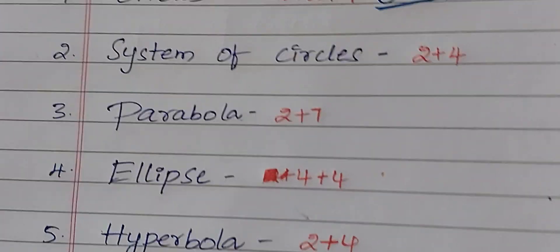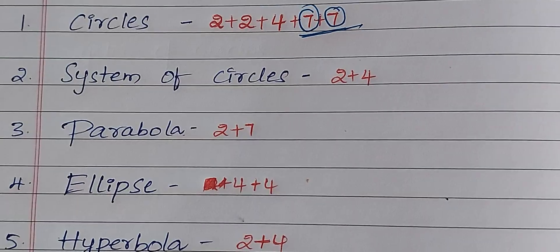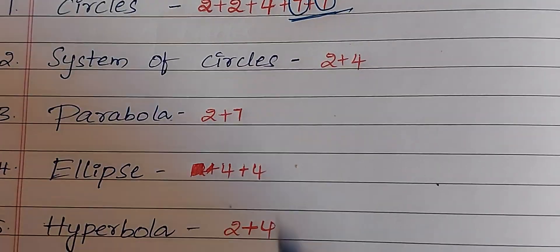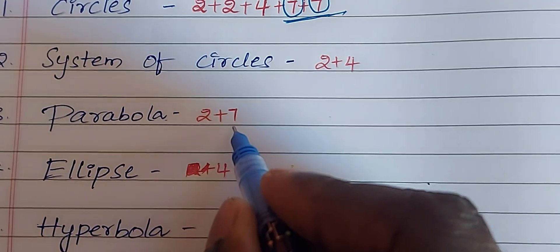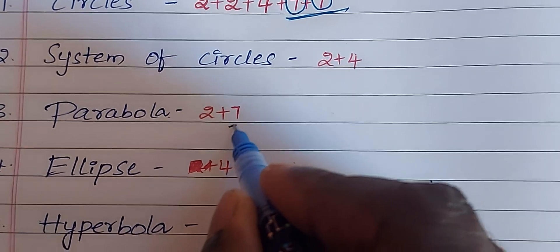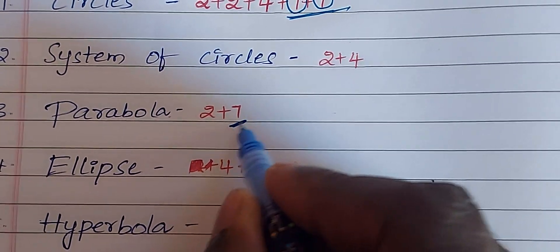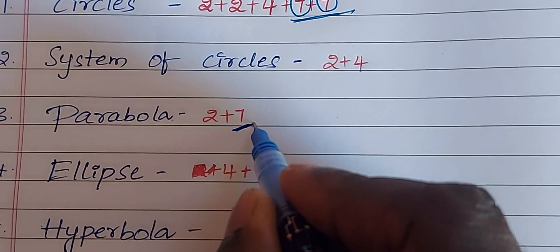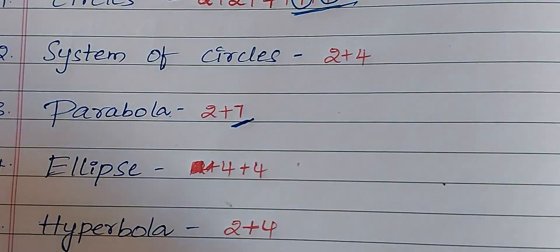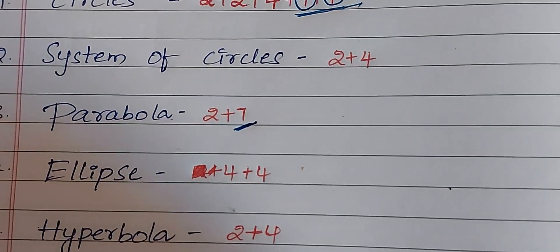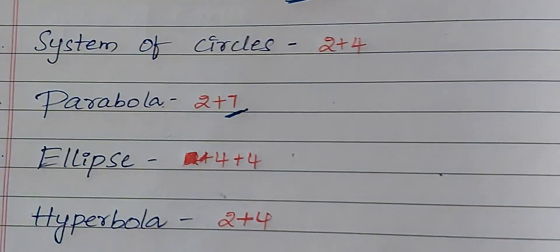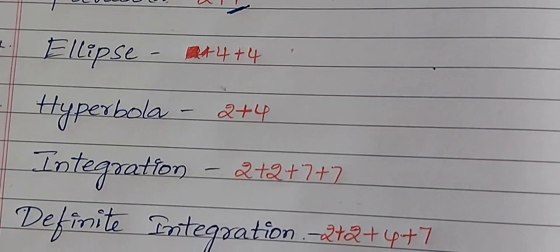Next, Parabola. Standard equation of parabola — compulsory question. Next, 3 points are given — how to find the equation of parabola. So these two models are compulsory questions.